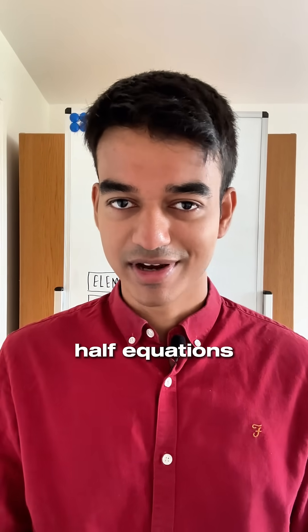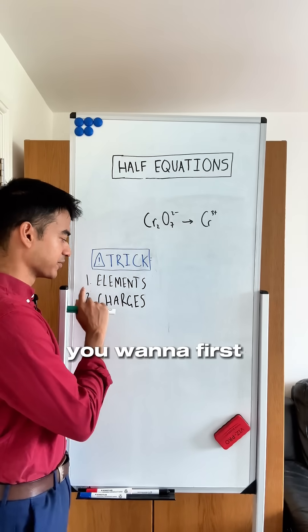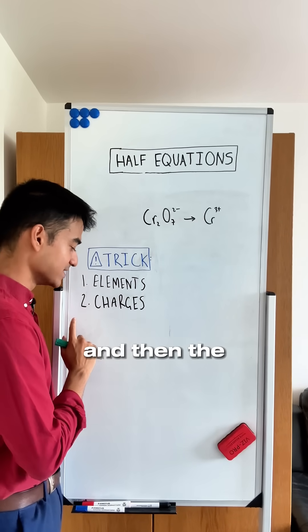I never understood how to balance half equations until I learned this one trick. Let's say we're given the reduction of dichromate ions into chromium ions. The trick is to first balance the elements and then the charges.